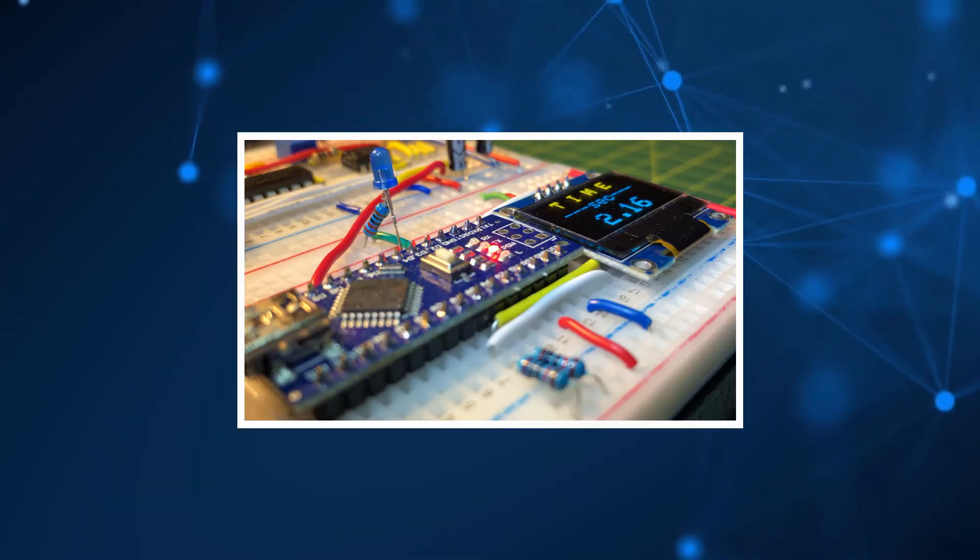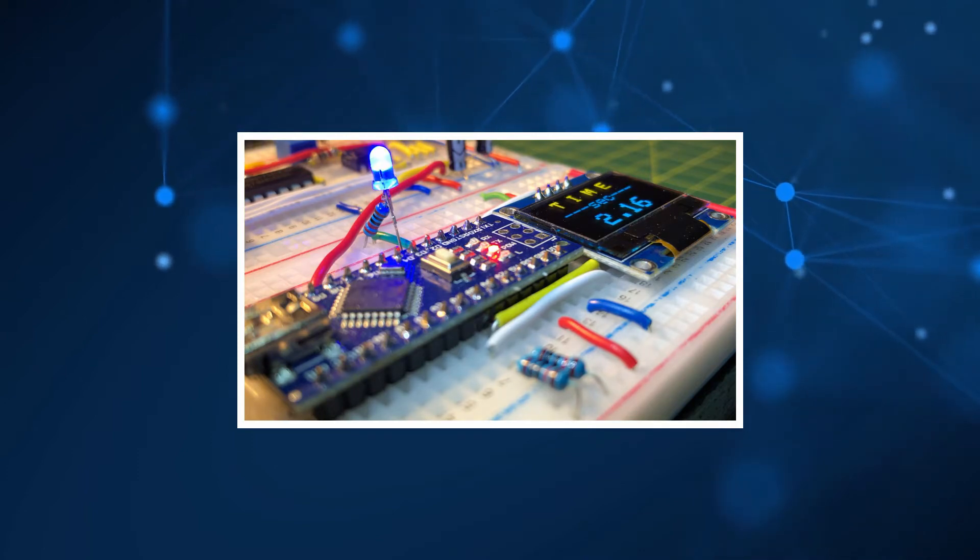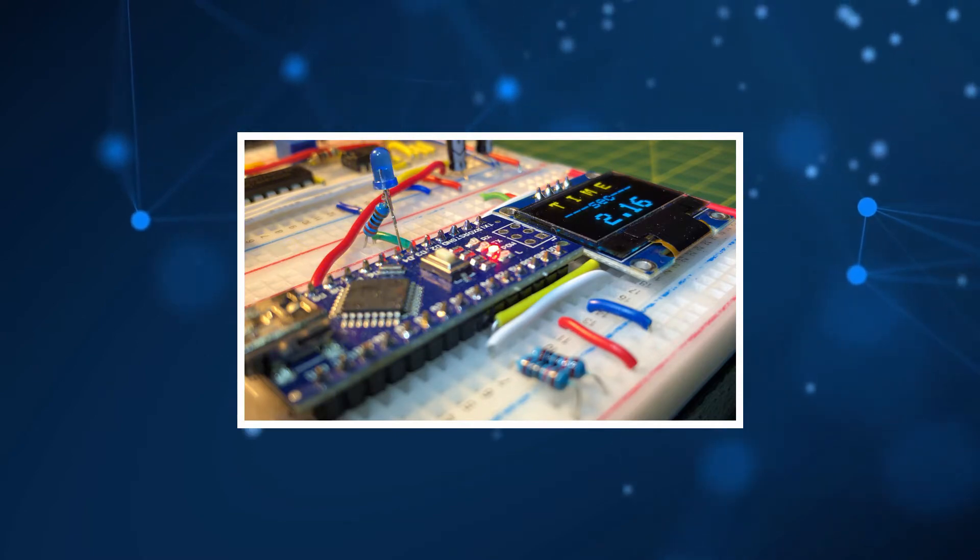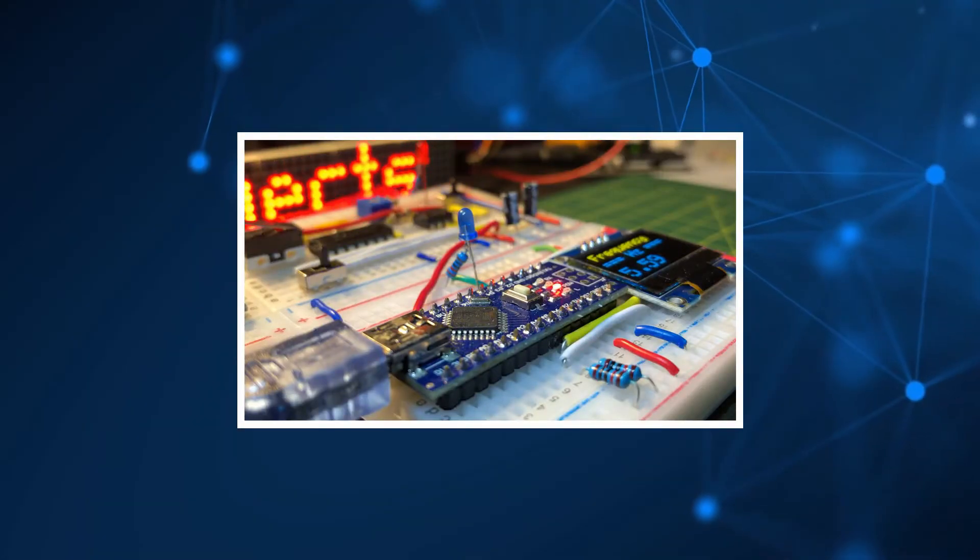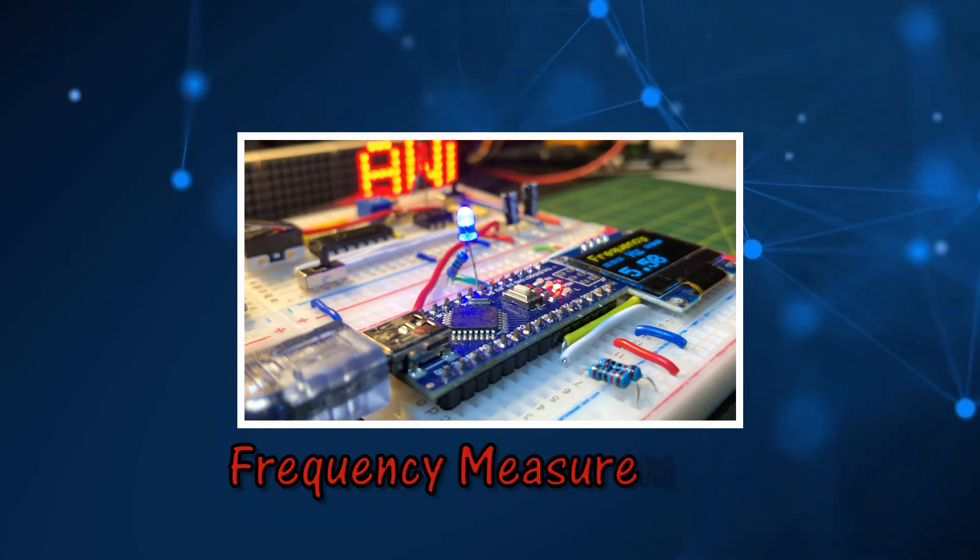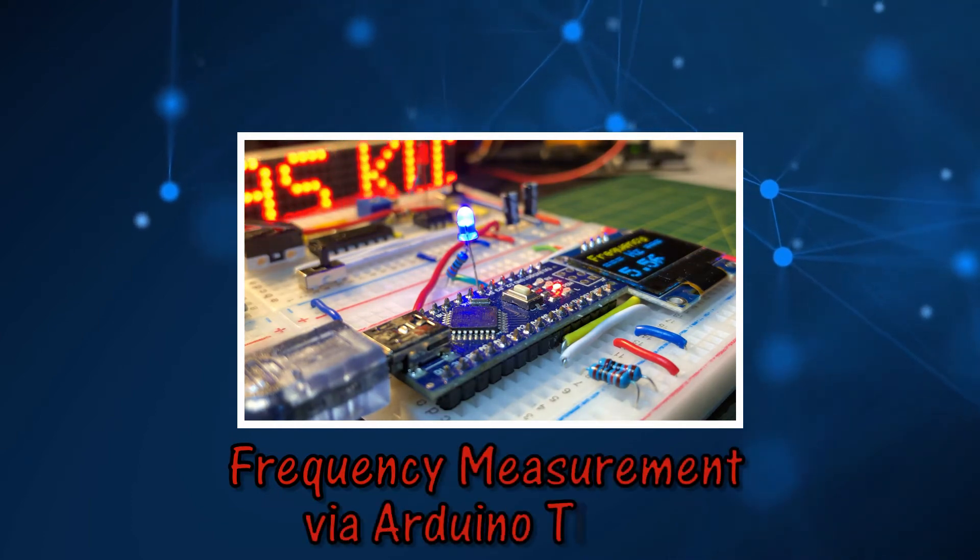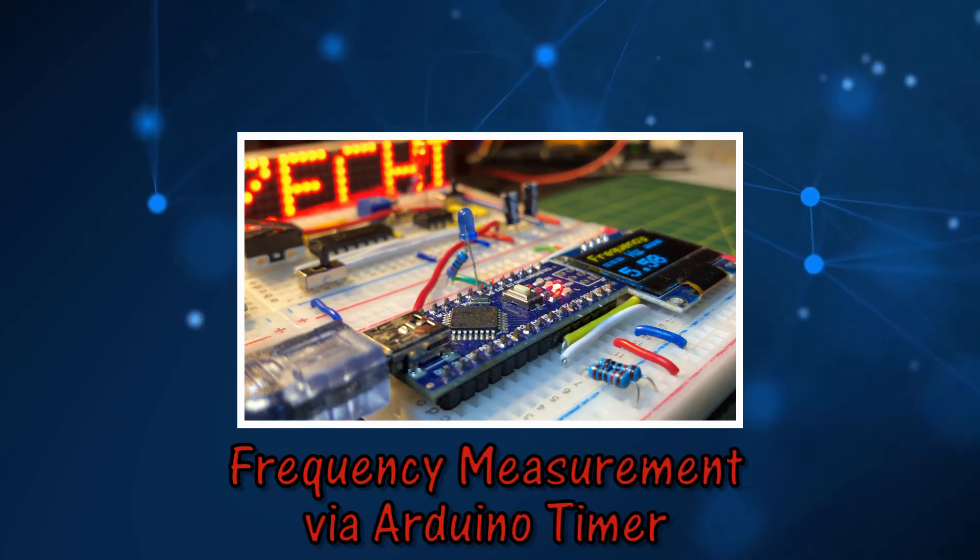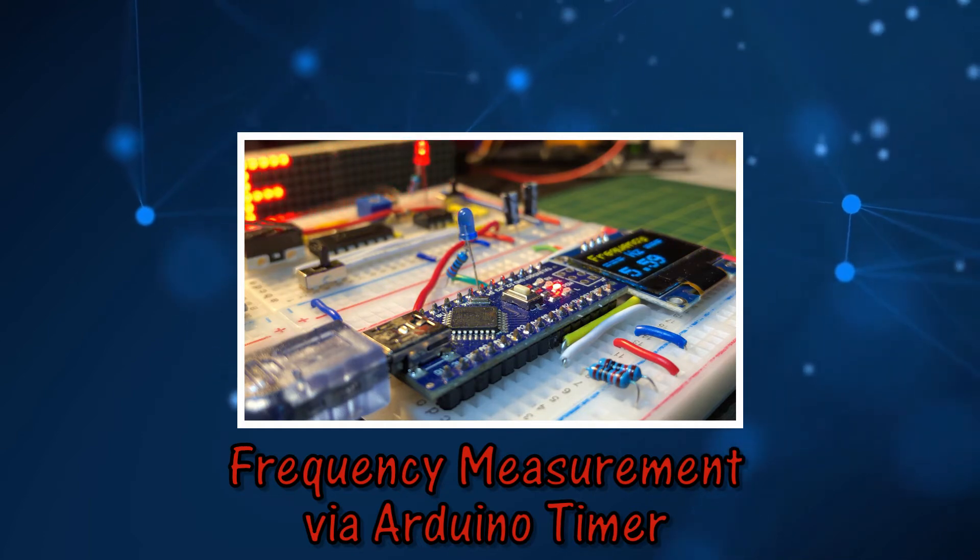In a previous video, Timer 1 was programmed to calculate the time between two pulses using input capture and overflow interrupts. In this video, the sketch is modified to calculate and display the frequency of a periodic signal input at Arduino's digital pin.